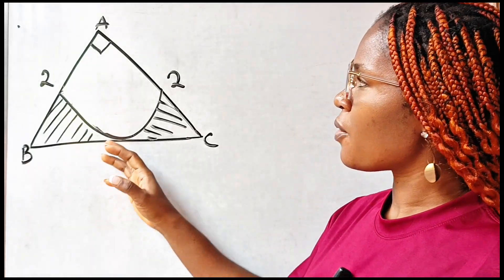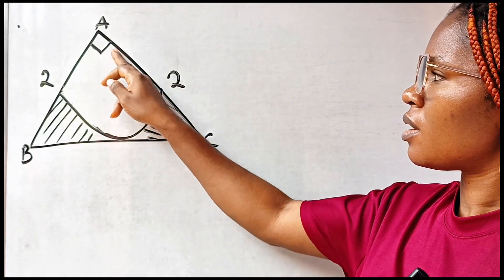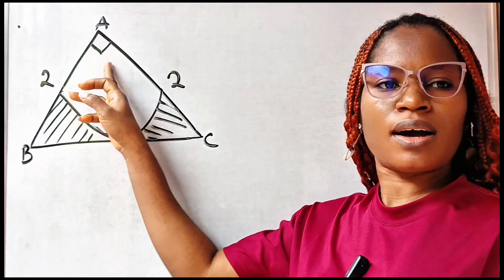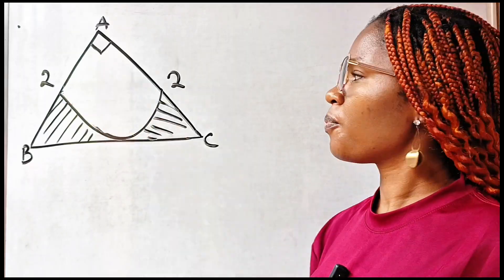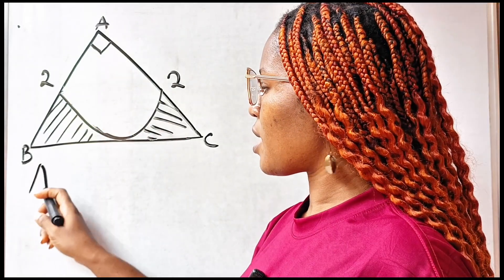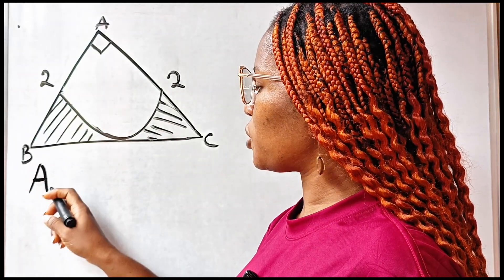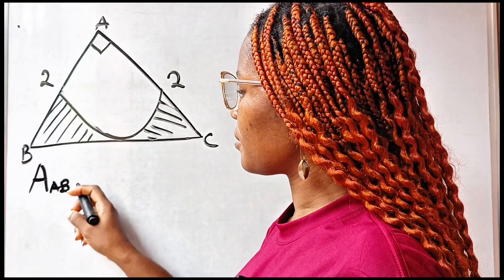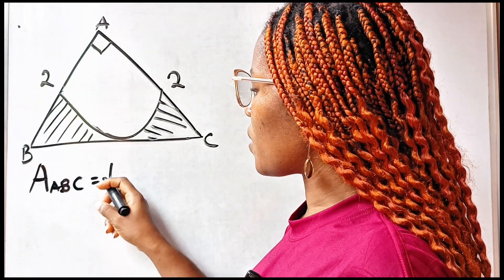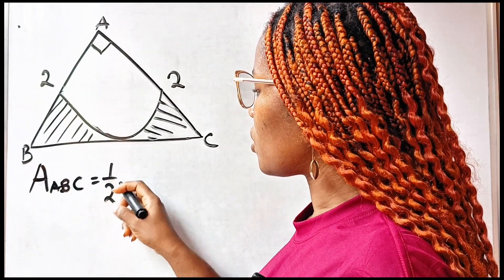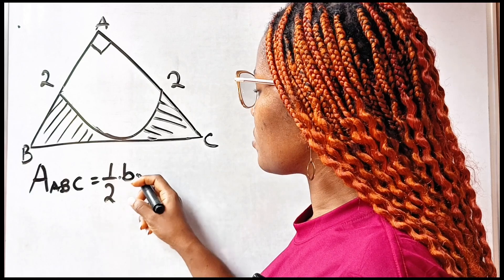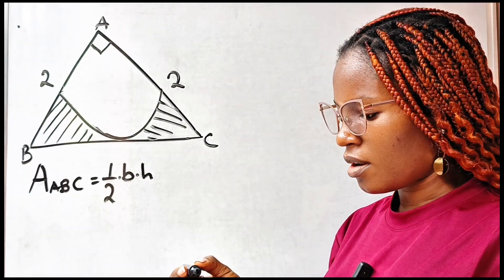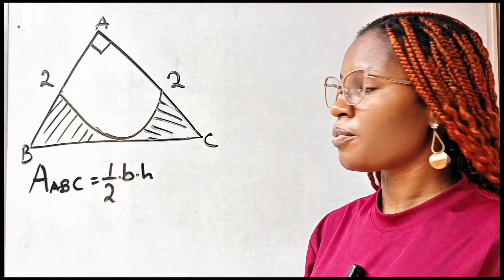This is a right angle triangle. As you can see, there is a right angle at point A. So the area of a triangle — the area of triangle ABC — is equal to half multiplied by the base multiplied by the height. That is the formula for the area of a triangle.